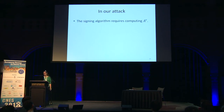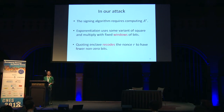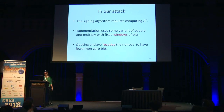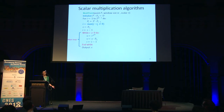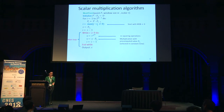Returning to our attack: the signing algorithm requires computing the exponentiation A^r using a variant of the square-and-multiply algorithm with a fixed window size. Inside the SGX enclave, the nonce r is recoded with a fixed window length of 5. This windowed algorithm processes the recoded representation of r from most significant to least significant digit. For each digit, it performs W=5 squaring operations followed by a single multiplication. Everything inside the loop is constant time, but the algorithm leaks information about the number of loop iterations.